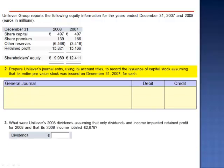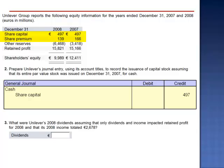We're asked to prepare Unilever's journal entry using its account titles to record the issuance of capital stock, assuming that its entire par value stock was issued on December 31, 2007 for cash. When we look at the 2007 balances and reconstruct the journal entry, we debit cash for the entire amount of the investment, credit share capital for the par value 497, and share premium for the amount in excess of par 166. The total cash receipt was 663.